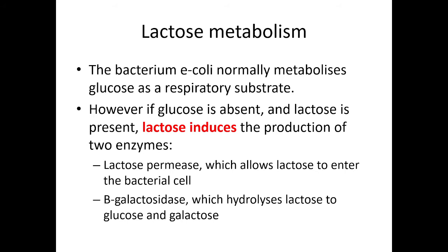Lactose permease is probably involved in putting channel proteins for lactose into the membrane. The other enzyme is called beta-galactosidase, which is an enzyme that hydrolyzes lactose to make the monosaccharides glucose and galactose - glucose that can then enter respiration and be metabolized. So normally E. coli metabolizes glucose, but if glucose isn't there and lactose is present, it starts producing these two enzymes that weren't there before, and these two enzymes help it metabolize lactose.